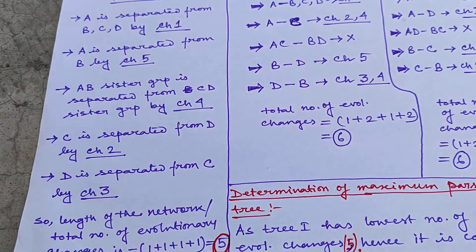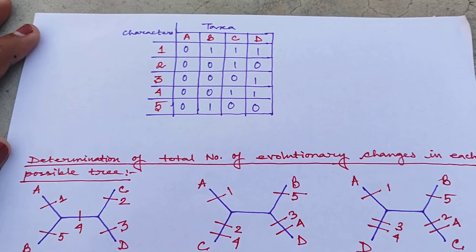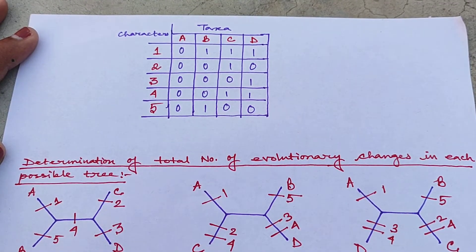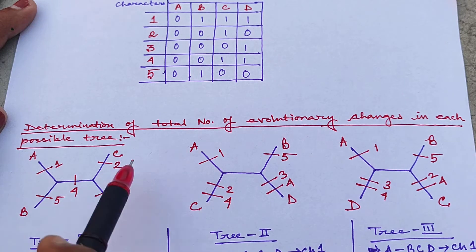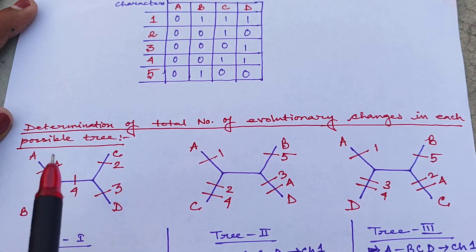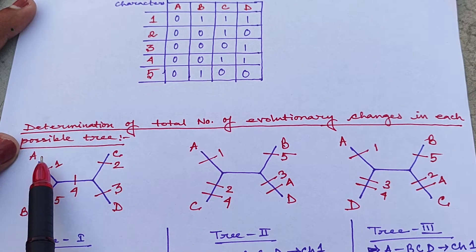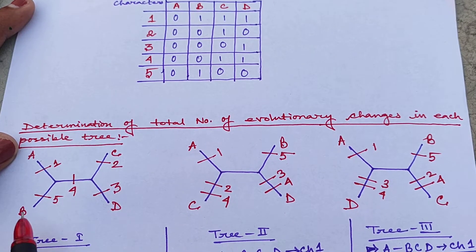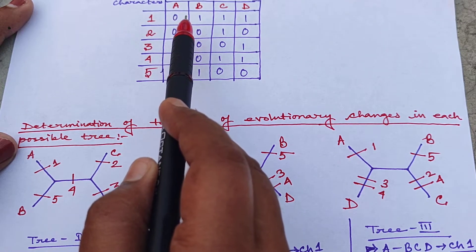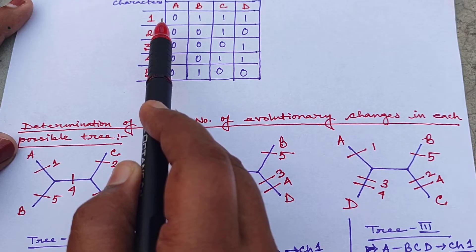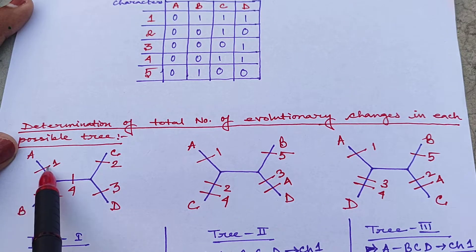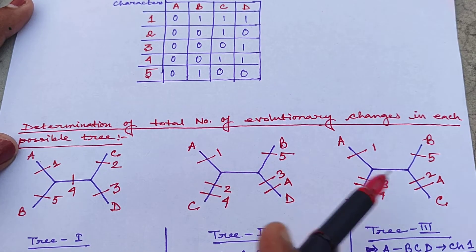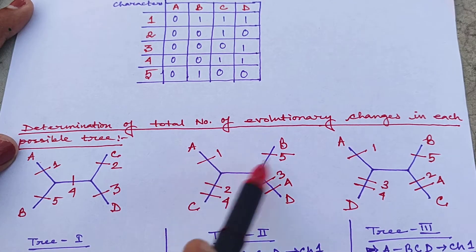Let's look at the matrix again written here for easy computation. The step is determination of total number of evolutionary changes in each possible tree. For tree 1, first of all we find how outgroup A is different from all other taxa B, C, D. Outgroup A is different from all other taxa by character 1, so we draw a mutation line for character 1 on the branch of A. This applies for all three trees similarly.